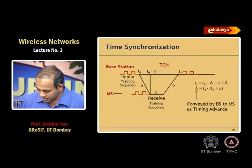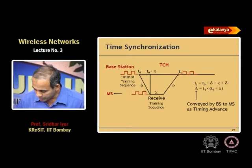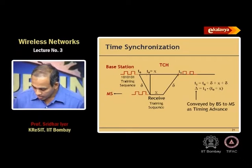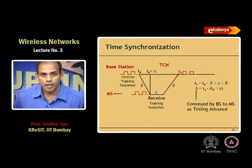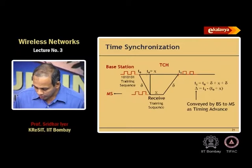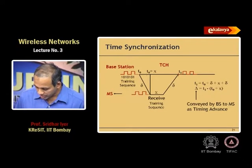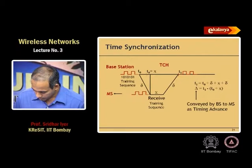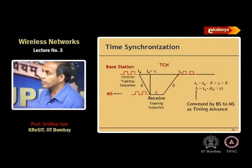The time synchronization channel — let's call it TCH, the time synchronization channel — works as follows. The base station is transmitting a waveform in this time synchronization channel. This has a propagation delay before it reaches the mobile node. The mobile node starts receiving the time synchronization information. To make it easier, let's think of it as bits — let's say the time synchronization bits are 1010101.